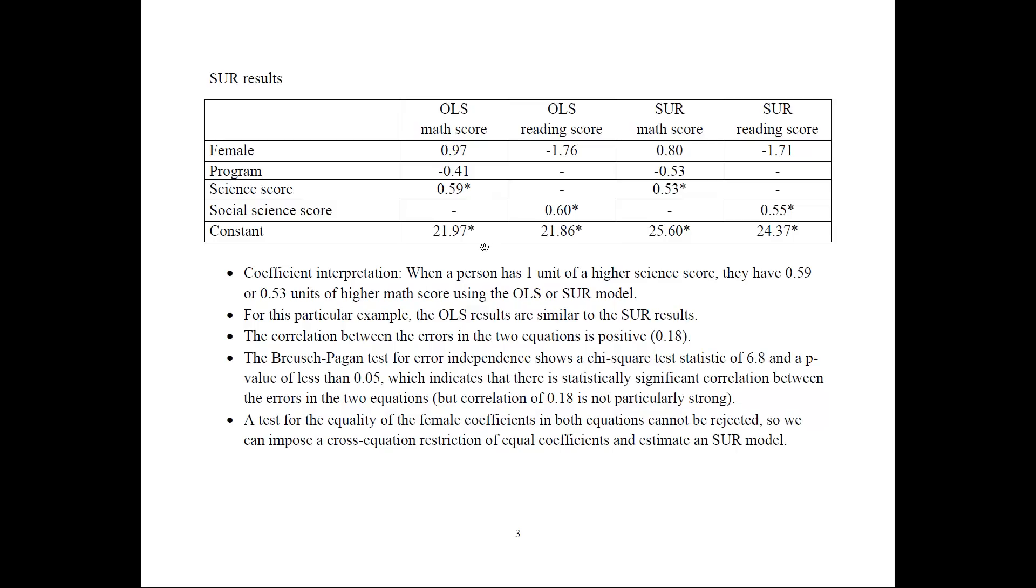For example, let's say if a person has one unit of higher science score, right here, then we would have 0.89 units higher math score using the OLS model, or 0.53 units higher score using the SUR model.